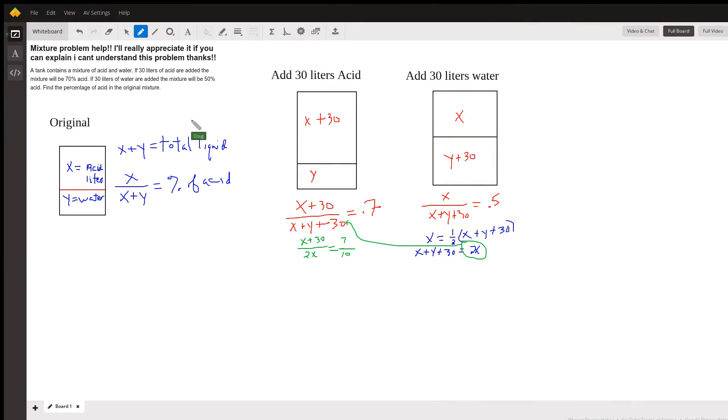This really helps to draw little diagrams. Here's the original situation. We've got this tank, a mixture of acid and water, and we're going to let x equal the number of liters of acid, y equal the number of liters of water, and if we knew that, how would we calculate the percentage of acid?